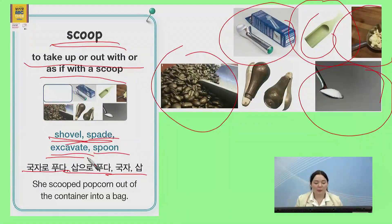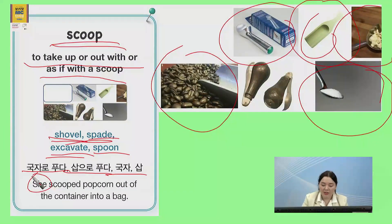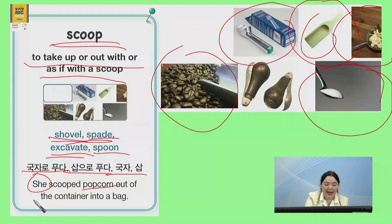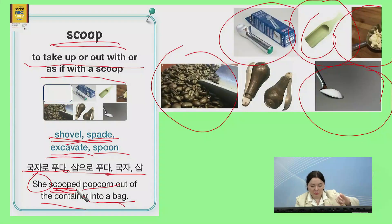So, you could say: she scooped popcorn out of the container into a bag. 한국말로는, 그녀는 팝콘을 통에서 봉지에 담았습니다. She scooped it out and put it into a bag.